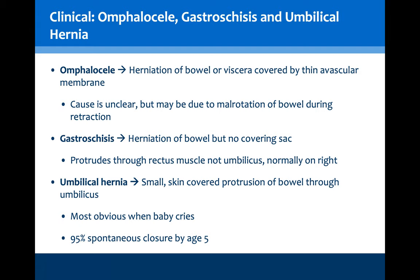Pathologies with the herniation, retraction and rotation can also present through omphaloceles, gastroschisis and umbilical hernias. An omphalocele is herniation of the bowel covered by a thin, avascular membrane. Gastroschisis is this herniation but without a covering sac. Note the difference: gastroschisis protrudes through the rectus muscle, not the umbilicus, and typically on the right side, whereas an umbilical hernia is normally a small, skin-covered protrusion of bowel through the umbilicus.